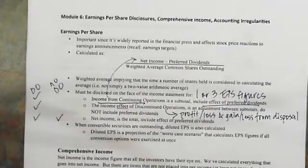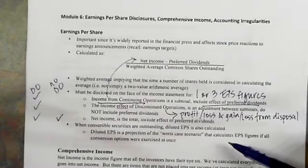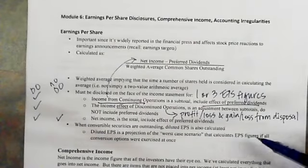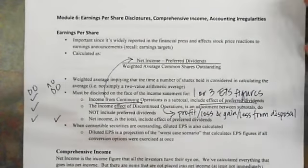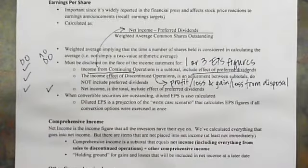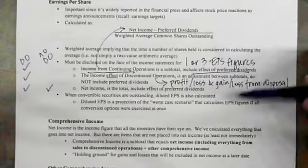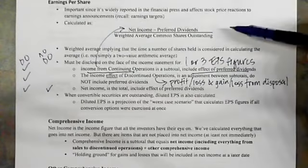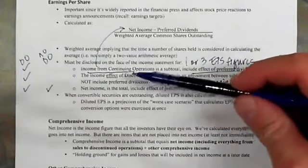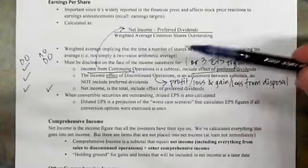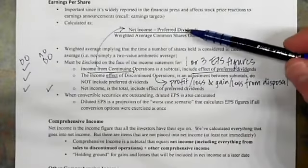The more sophisticated measures you'll learn to calculate are what we call diluted EPS. Diluted EPS is a projection of a worst-case scenario that calculates EPS figures as if all convertible shares and all convertible debt have been converted into shares of common stock. That's basically our EPS highlight for this chapter — know how many figures you have to calculate, know how to calculate these three and what goes in them, and be able to apply this formula.